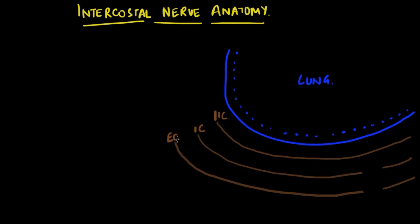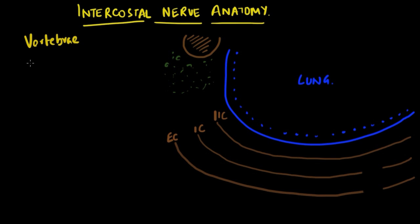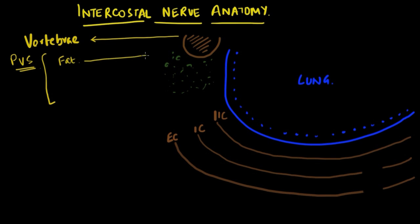Let's have a closer look at the relationship of the intercostal nerve in three areas: right next to the vertebra in the paravertebral space, medial to the angle of the rib, and at the angle of the rib. Here we have shown the three intercostal muscles in relationship to the lung, which lies anteromedially, and the vertebra, which lies posteromedially. Next to the vertebra is the paravertebral space containing fat, where the spinal segmental nerve emerges and divides into its dorsal and ventral branches.